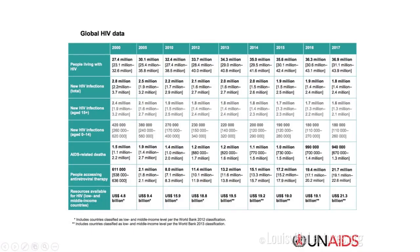In terms of people living with HIV, those numbers have gone up over time — from 27 million to 37 million. However, new HIV infections have actually decreased, from 2.8 million in 2000 down to 1.8 million. This is the impact of ART, antiretroviral therapy. AIDS-related deaths have also come down from 1.5 million to 940,000. The number of folks accessing ART increased from 611,000 to 21 million — that trend is helping decrease the total number of new infections.